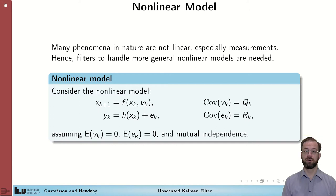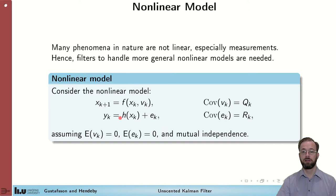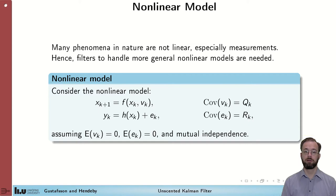An example is the nonlinear measurements provided by radar or the coordinated turn dynamics model. Therefore, we extend the model to nonlinear models. The form is more or less the same as the linear case, except that the linear transformation of the state has been replaced by a generic function of both the state and the process noise. Similarly, the measurement is a generic function of x. Note that the linear model is actually a special case of this. We still assume known covariance and zero mean for both process and measurement noise.